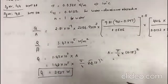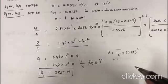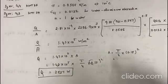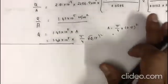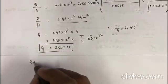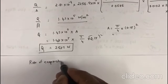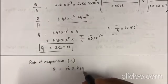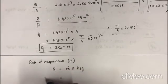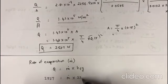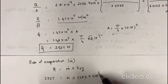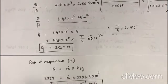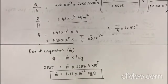And now we have to find the mass flow rate, which is the rate of evaporation, m dot. This is given as Q = m dot × hfg. You have to remember this relation. So m dot = Q/hfg = 2527/(2256.9 × 10³) = 1.11 × 10⁻³ kg/s. This is the rate of evaporation. So this is the end of it.